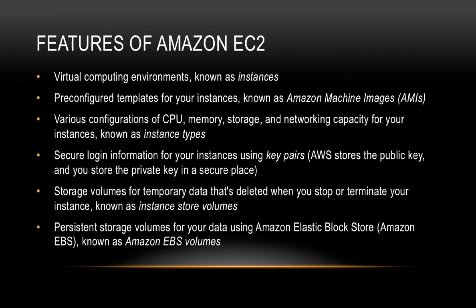We have various configurations of CPU, memory, storage, and networking capacity. These configurations are known as instance types. So we have instances that provide more CPU, or maybe more memory, or a combination of more CPU and memory, or even more storage, less CPU, less memory — these different combinations are known as instance types. We're going to speak about instance types in the next video.